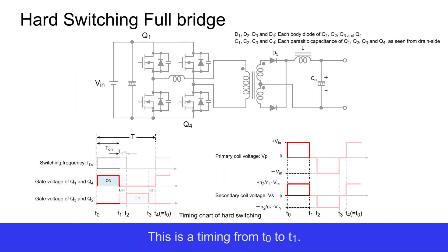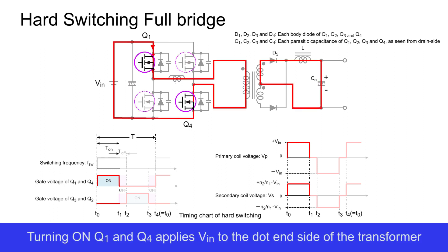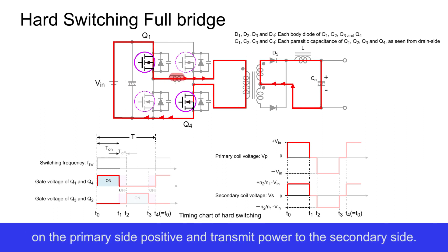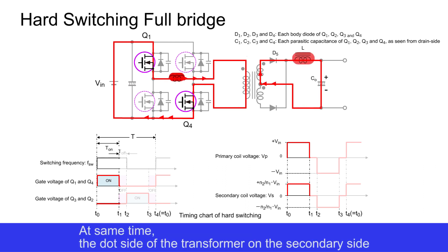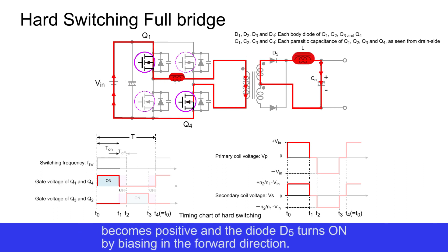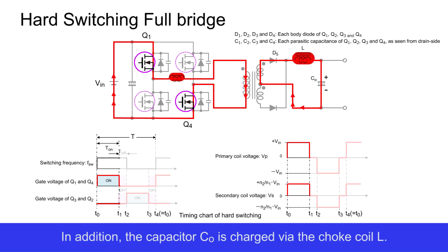This is the timing from T0 to T1. Q1 and Q4 are turned on. Turning on Q1 and Q4 applies VIN to the dot end side of the transformer on the primary side positive, and transmits power to the secondary side. At the same time, the dot side of the transformer on the secondary side becomes positive, and diode D5 turns on by biasing in the forward direction. In addition, capacitor CO is charged via the choke coil L.